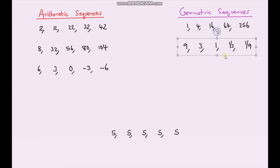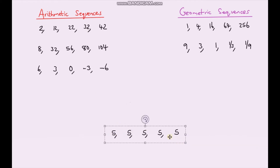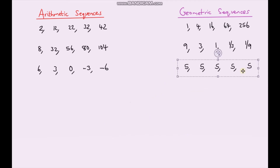This last one looks peculiar, but I'm not adding or subtracting anything to go from one term to the next, so it can't be arithmetic. It has to be geometric. Think about what I'm multiplying by to go from one term to the next — the answer is one. Whenever we multiply by one, the number doesn't change. Five times one is five, and if I keep multiplying by one the number is not going to change.